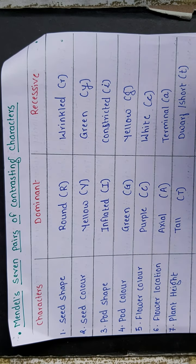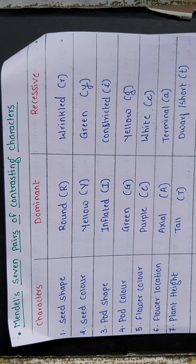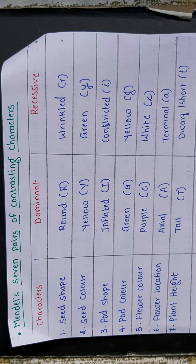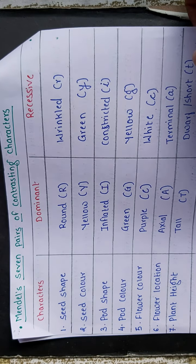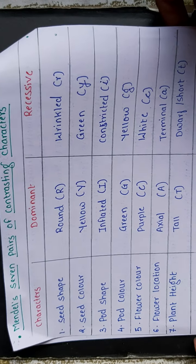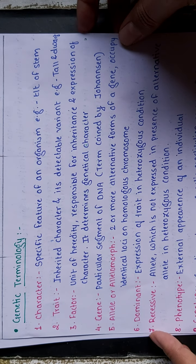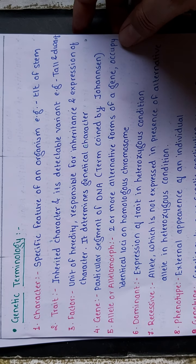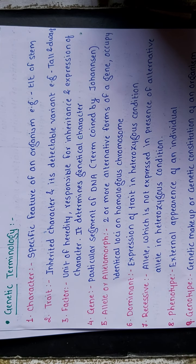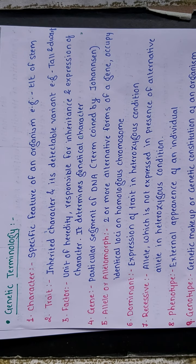These are the seven contrasting characters Mendel used to perform his crosses. Before moving to Mendel's actual postulates and crosses, one should know the different genetic terminology. There are 21 different terms used in Mendel's crosses. We will go through them one by one. The first is 'character.'